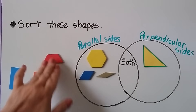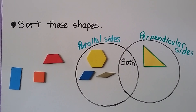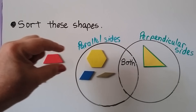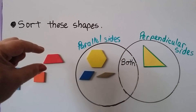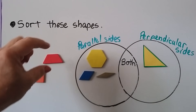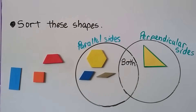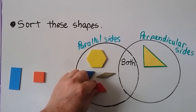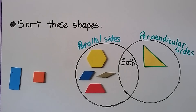What about this trapezoid? Does it have parallel sides? The top and bottom are parallel, and the sides aren't. But the top and bottom are parallel. Do you see any right angles for perpendicular sides? No. So it would just go in the circle for parallel sides.